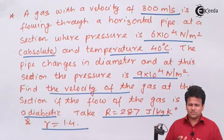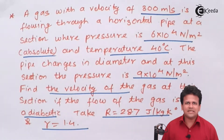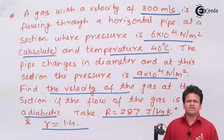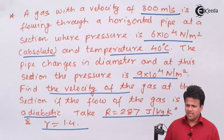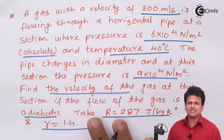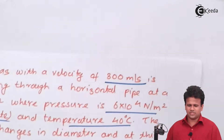There are two sections mentioned in the problem: the inlet as well as the outlet where the diameter is changing. We will differentiate the problem into two parts — section 1-1 and section 2-2. Let us write down the data accordingly.